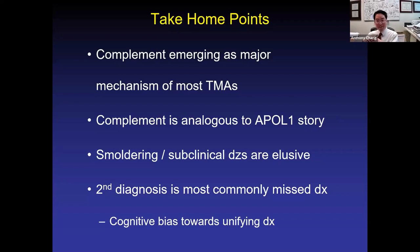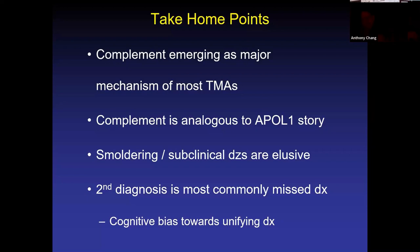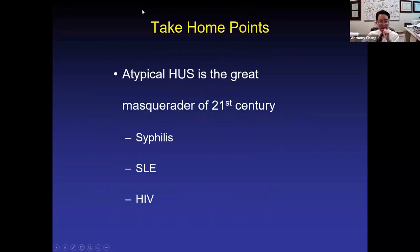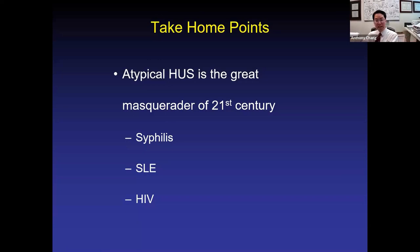This entity leans towards Occam's dictum, where John Occam said your patients can have as many diseases as they damn well please. We'll talk about how atypical HUS exactly does that. As a result of all of these points, I now believe that atypical HUS is a great masquerader — or great mimicker — of the 21st century. Decades ago that used to be syphilis, then it was lupus, then it was HIV. Those are no longer difficult diagnoses. But atypical HUS is.